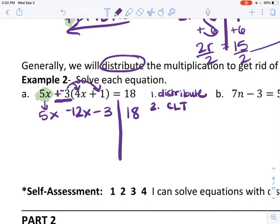I see some like terms. Remember that like terms always have to be on the same side of the equal sign. So 5x and 12x work. 3 and 18 do not work because they're not on the same sides of the equal sign. You can't add things across the equal sign.